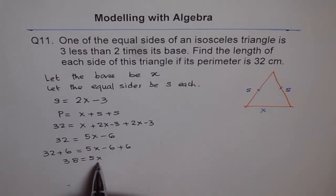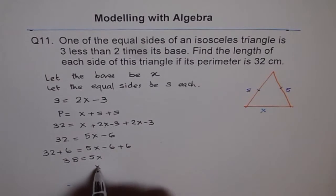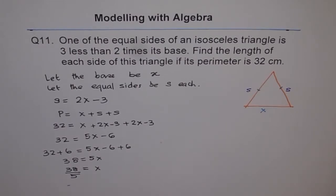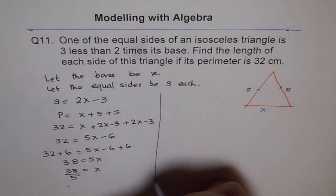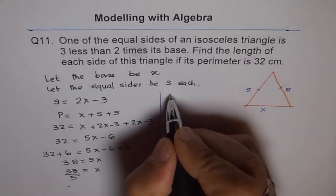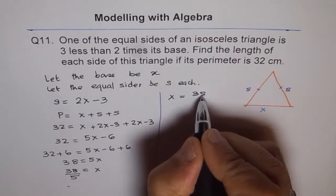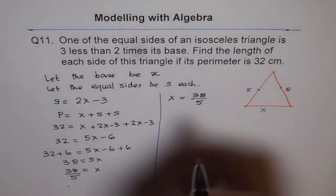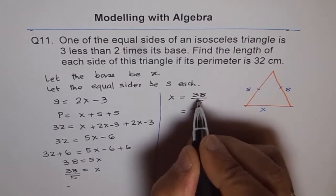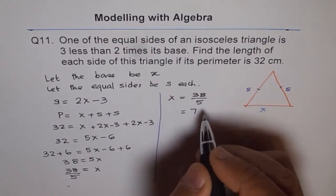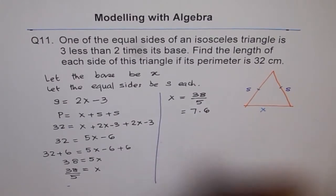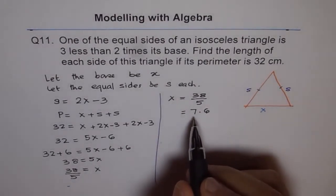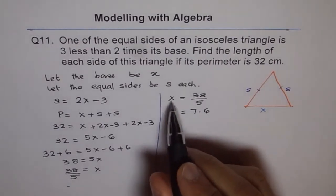Now to find x, we need to divide both sides by 5. So x equals 38 divided by 5. 38 divided by 5: 5 goes 7 times, 7 times is 35, then we get 30 which is 6. So 7.6. We got our answer in decimal places. Don't be afraid of that. 7.6, that is the length x.